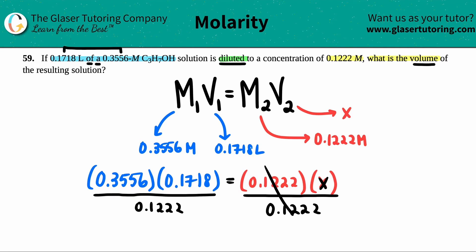That cancels out. And now we just do the math. 0.3556 times 0.1718, and then just divide that by 0.1222. If we're playing the sig fig game here, the lowest number of sig figs between these three numbers is four sig figs, so my answer should have four sig figs.